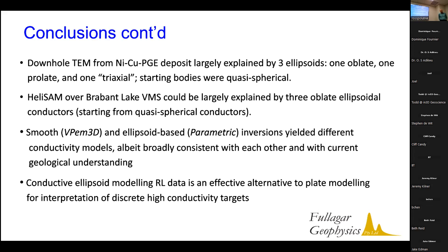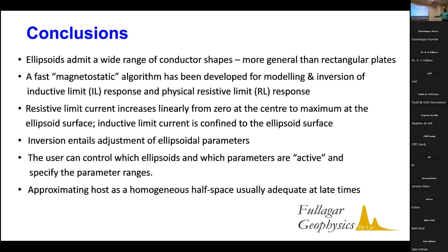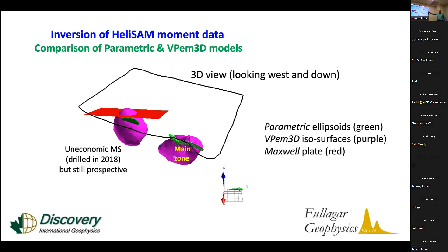Q: You were showing a comparison of the plate model and your ellipsoid model and the smooth model — those are very different in dip and everything. Who ran the plate model? A: That was done by another consultant who was consulting for the company and ran it before we did. I was just happy to lay our results on top. Q: Are they going to drill that target? A: Yes, and I was told that there are economic sulfides — copper in the holes — but it's very deep and it's a junior company, so it'll sit there until more money comes along.